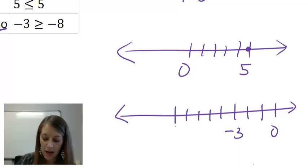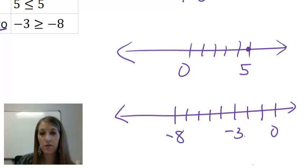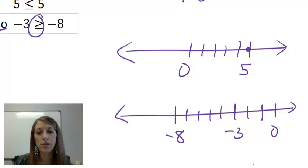I see that negative 3 is to the right of or the same number as negative 8 on my number line. So this is a true statement here. So hopefully now I have clarified what each of these inequality symbols means.